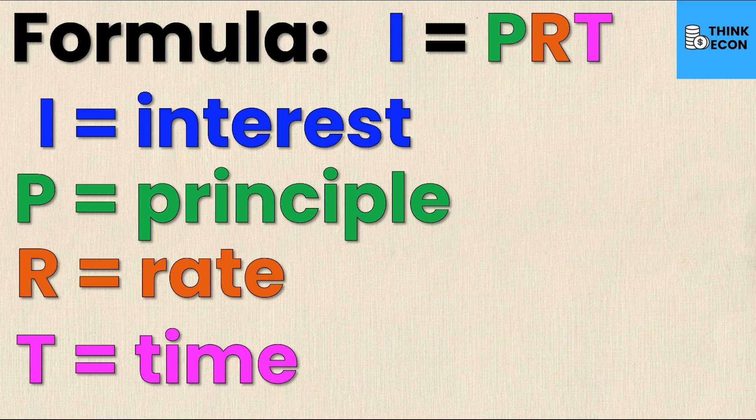Speaking of the initial amount, that's what P stands for. P is principal, and principal is the initial amount that you start with. Next we have R, which is the interest rate, and it's always written as a decimal.